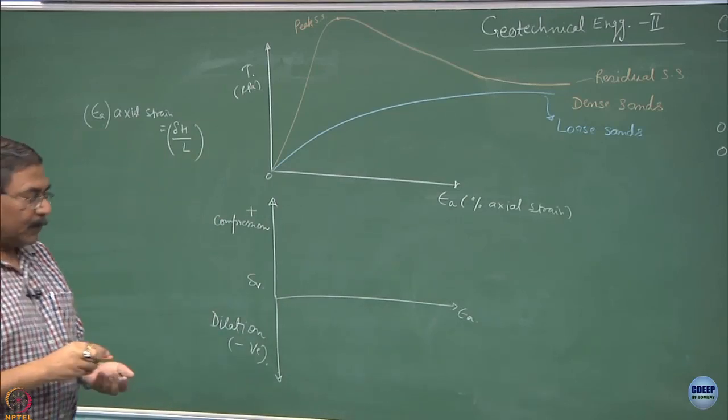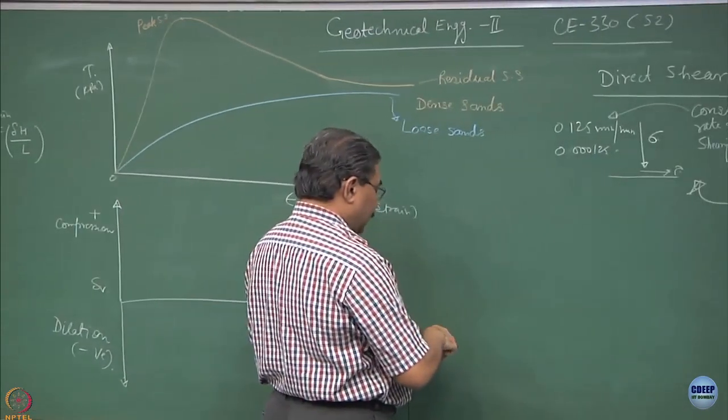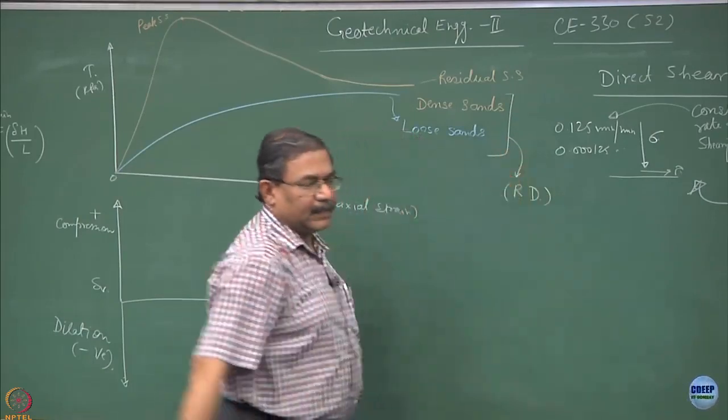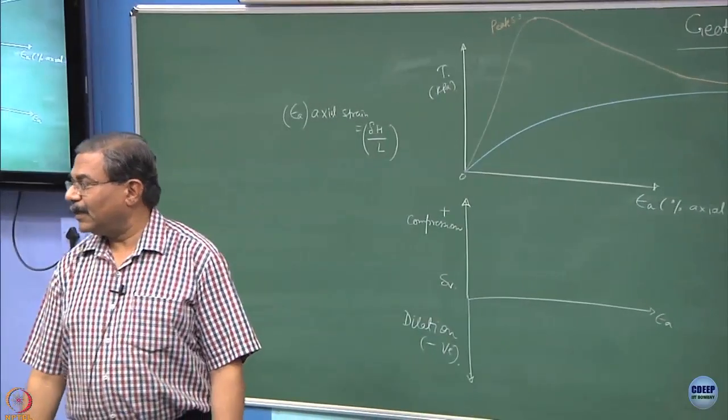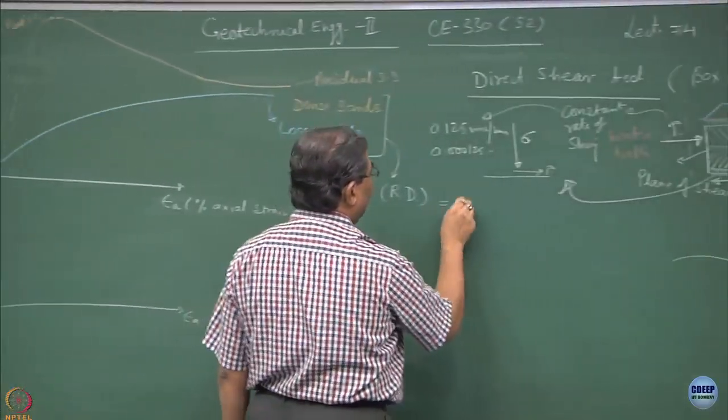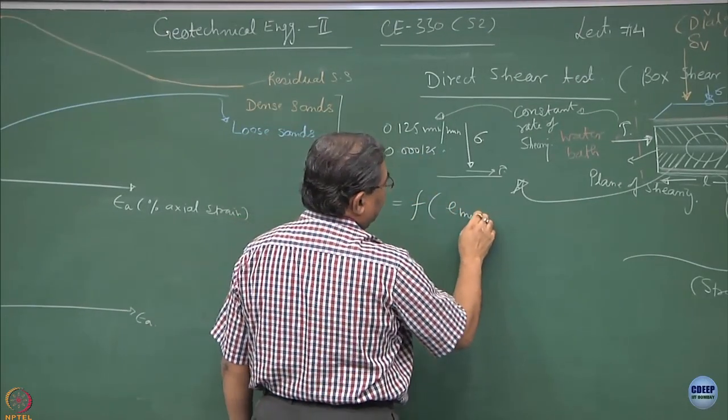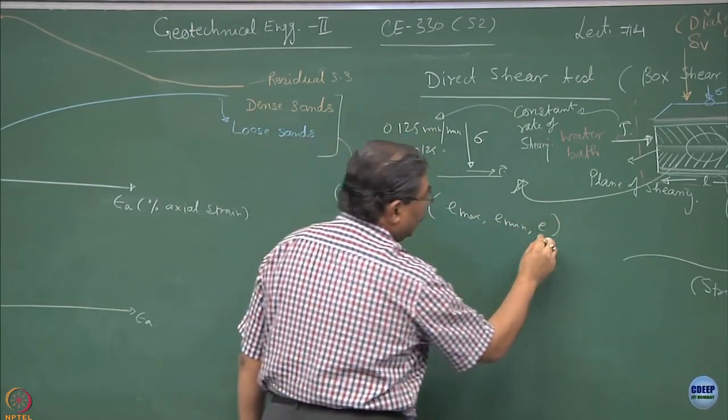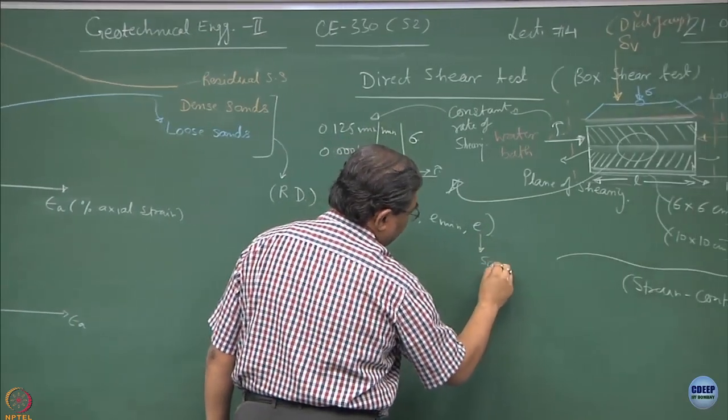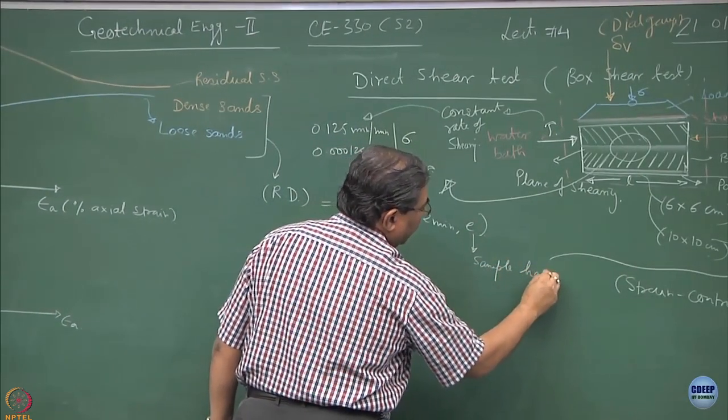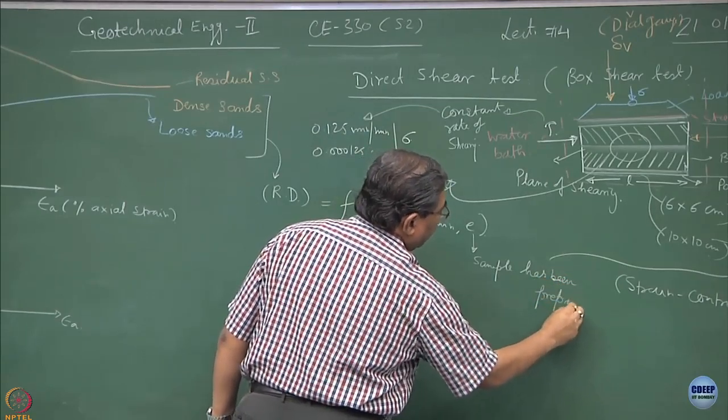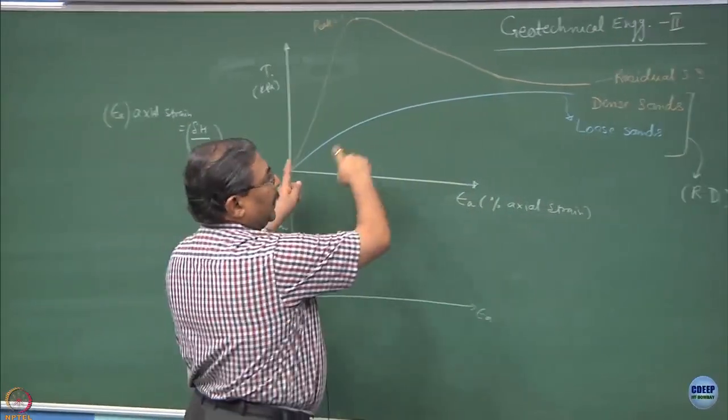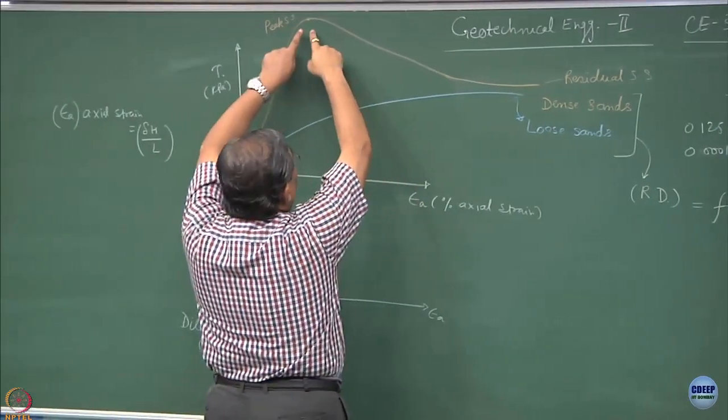I hope you remember the denseness and the looseness of the material would depend upon Rd, the relative density of the sands. And relative density is a function of Emax, Emin and the void ratio at which the sample has been prepared. In case of the loose sands, shearing does not result into a hump, we do not get a peak.